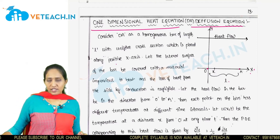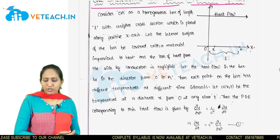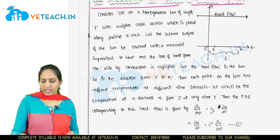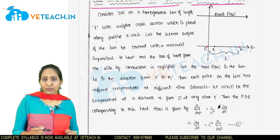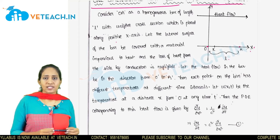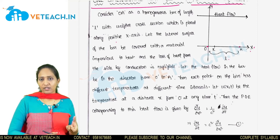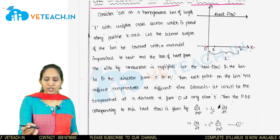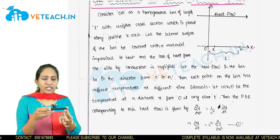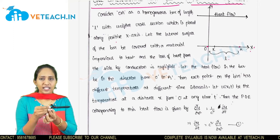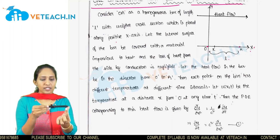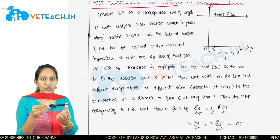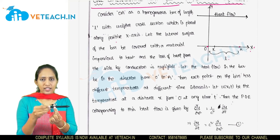Heat flows along the rod. For example, if we apply heat at one end — like placing one end near a stove — the heat will flow from that end through the rod. The temperature at the end point changes over time as heat propagates from the heated end to the other end.